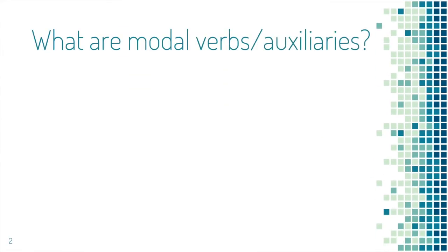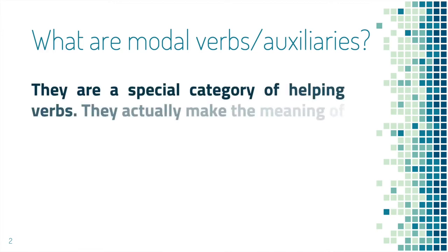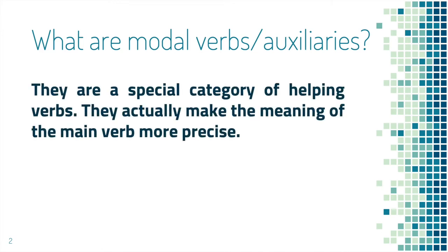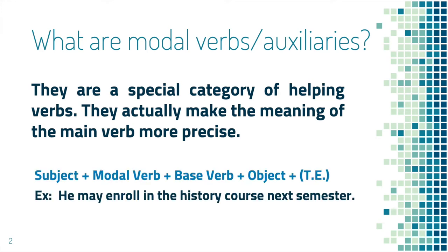What are modal verbs or modal auxiliaries? Well, they are a special category of helping verbs. They actually make the meaning of the main verb more precise. And they follow the following formula: subject plus modal verb or modal auxiliary plus base of the verb — notice, without 'to' — plus object plus the time expression, if you have it.